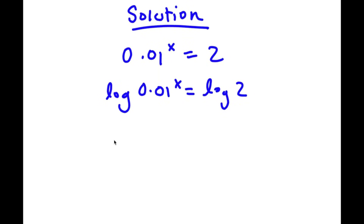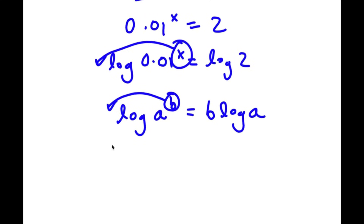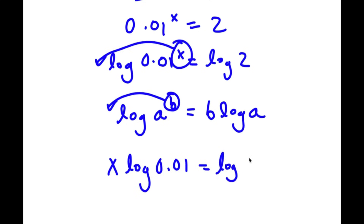Now, if I have something in the form log a to the power of b, I can simply move this exponent b to the front. So this would equal b times log a. So in this case, I have log 0.01 to the power of x, and I can simply move x to the front. So that's going to equal x times log 0.01 is equal to log 2.